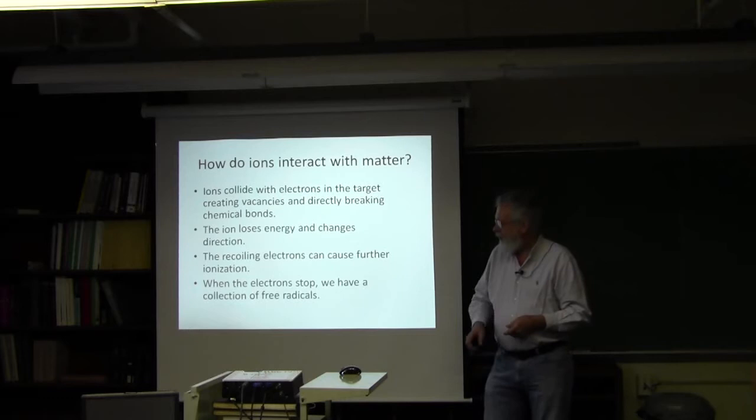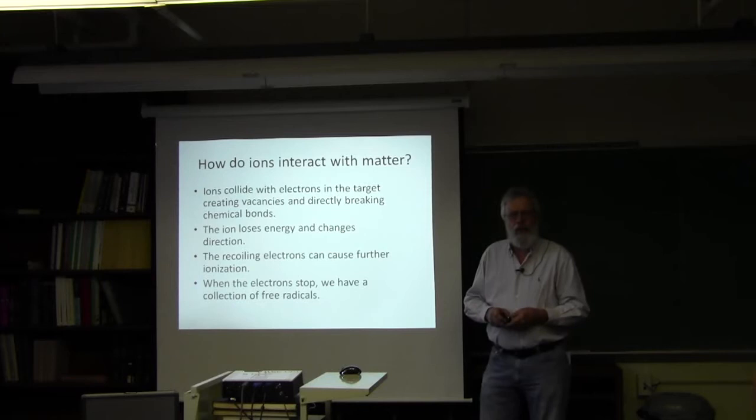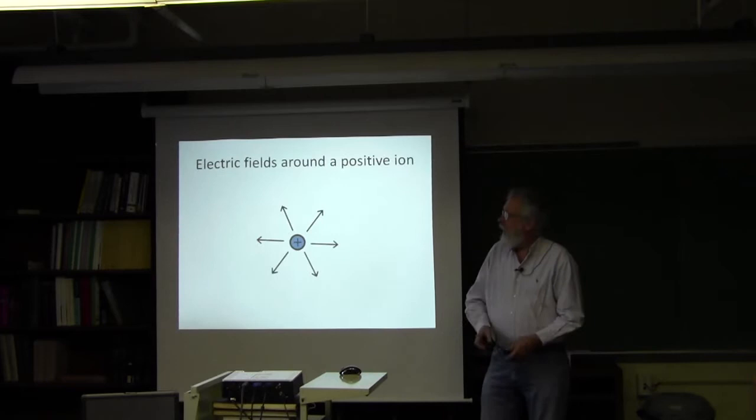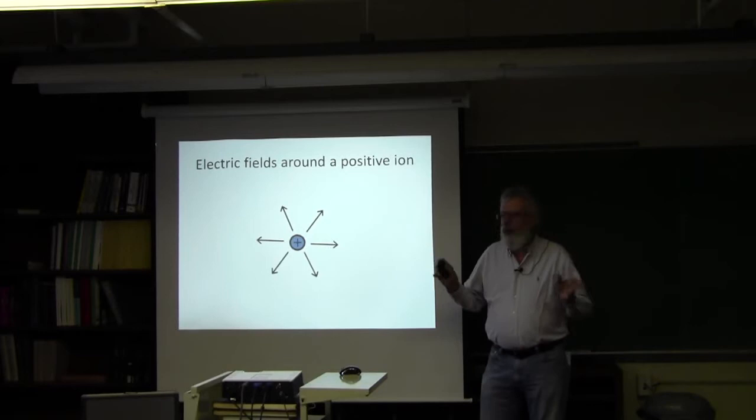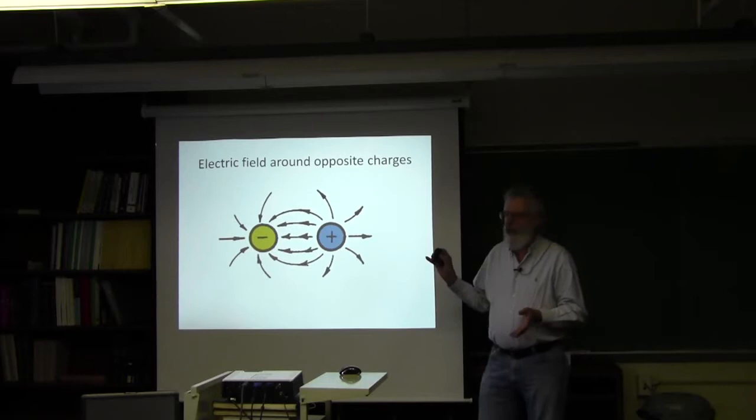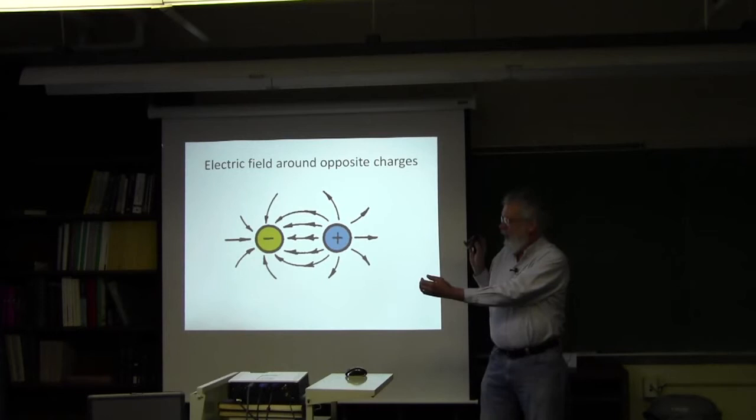And when the electrons stop, you can get free radicals or active species at the location of the track end of the electron. Just a picture of a positive charge with electric fields going outward. And if you have a negative charge, these outward fields bend around to the negative charge. And the two charges then are attracted to each other.